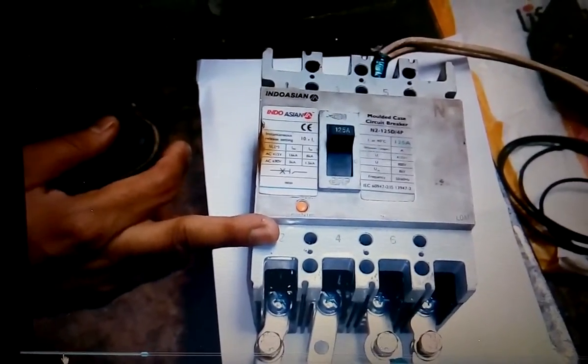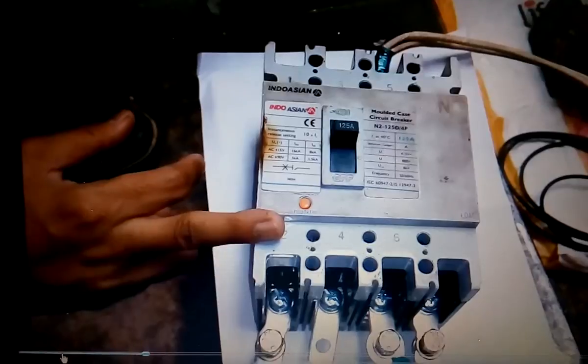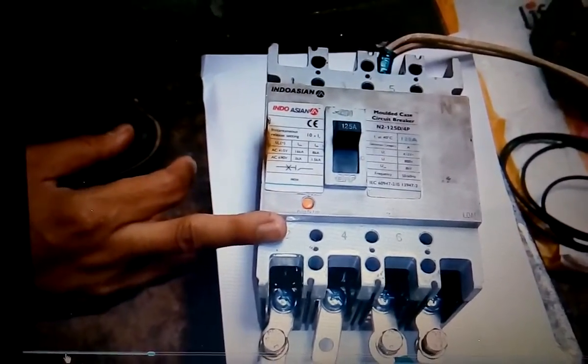So here for 125 ampere MCCB, we are planning to inject 350 ampere current through MCCB as one of the pole.